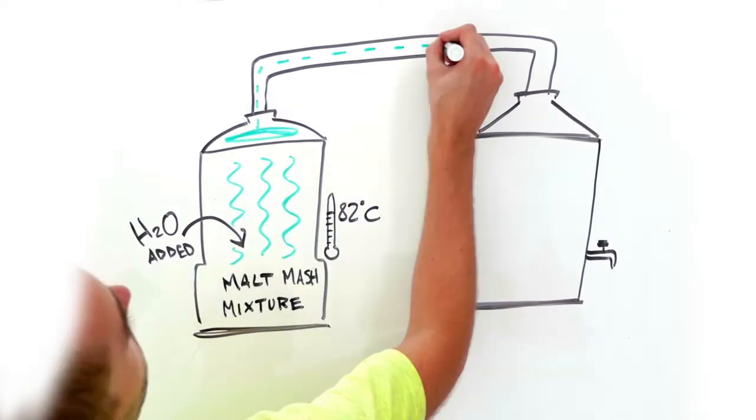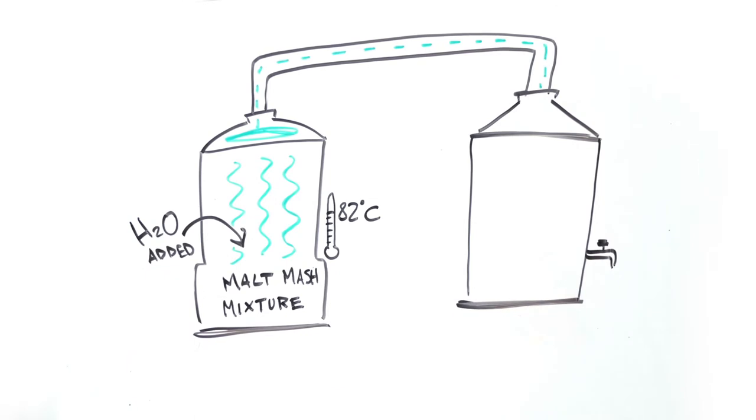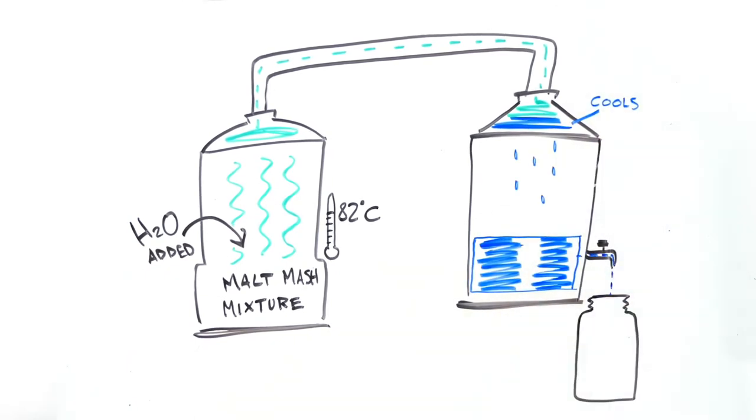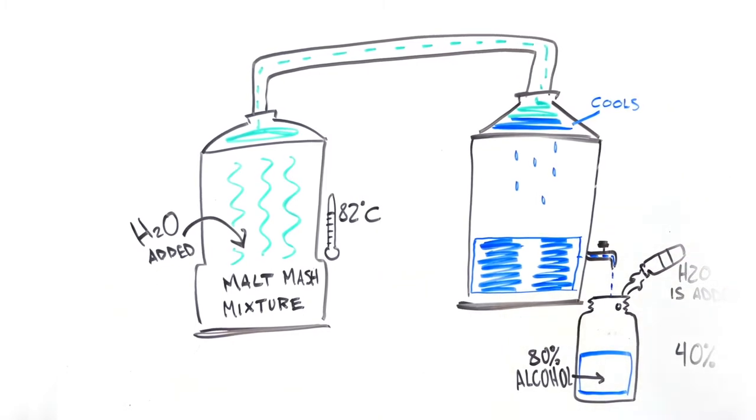At that temperature, alcohol will boil, but water will not. As the alcohol evaporates, it is recovered by a condenser and collected. This clear whiskey is about 80% alcohol, which is too strong to drink comfortably. So, whiskey makers mix it with water to cut it down to about 40%.